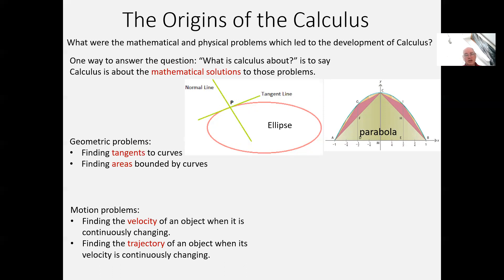The other set of problems that lead to the calculus is of much more current and recent vintage. It goes back only to the scientific revolution of the 17th century, as opposed to the original problems which go back to the ancient Greeks. Those are problems of motion — finding the velocity of an object in which the velocity is changing all the time. To find the trajectory, the path of an object moving with a continuously changing velocity. These problems also led to the development of calculus in the scientific revolution.